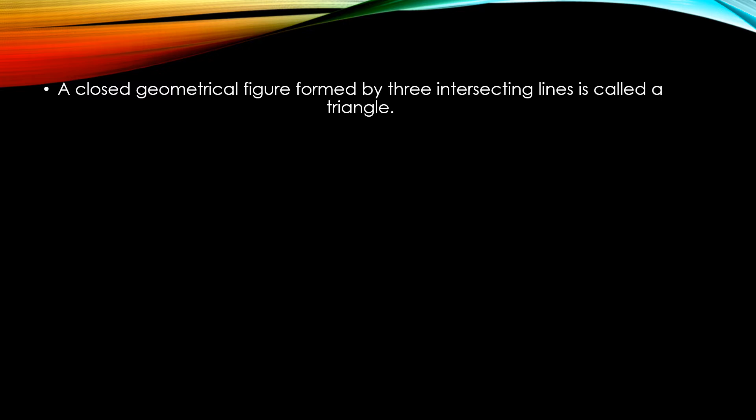A closed geometrical figure formed by three intersecting lines is called a triangle. What does this mean? If we have three lines—one line red, one green, and one yellow—the red and green lines intersect here, the red and yellow lines intersect here. These are intersecting points.